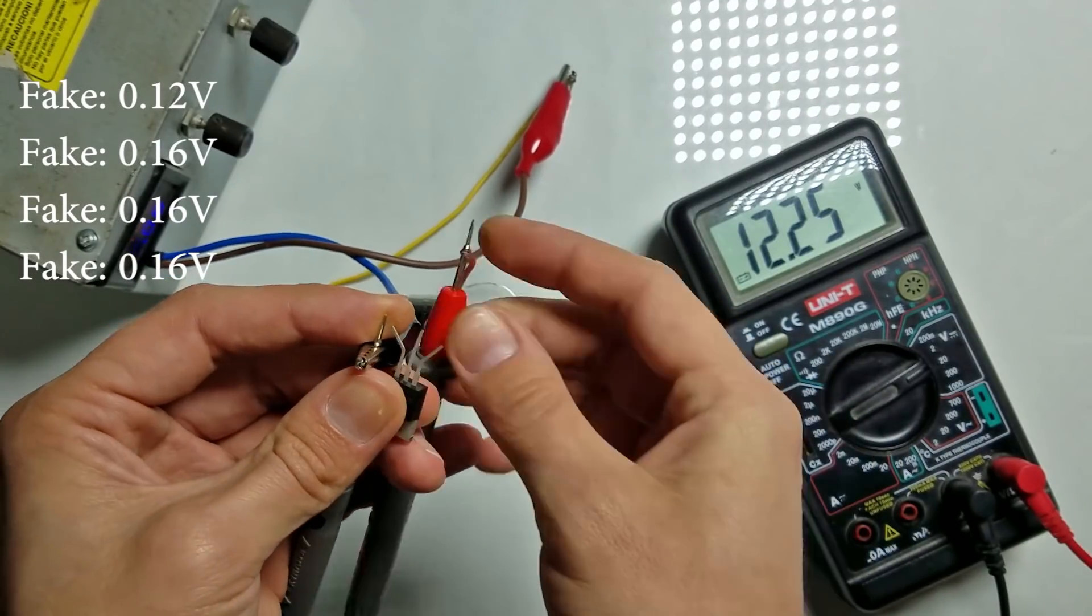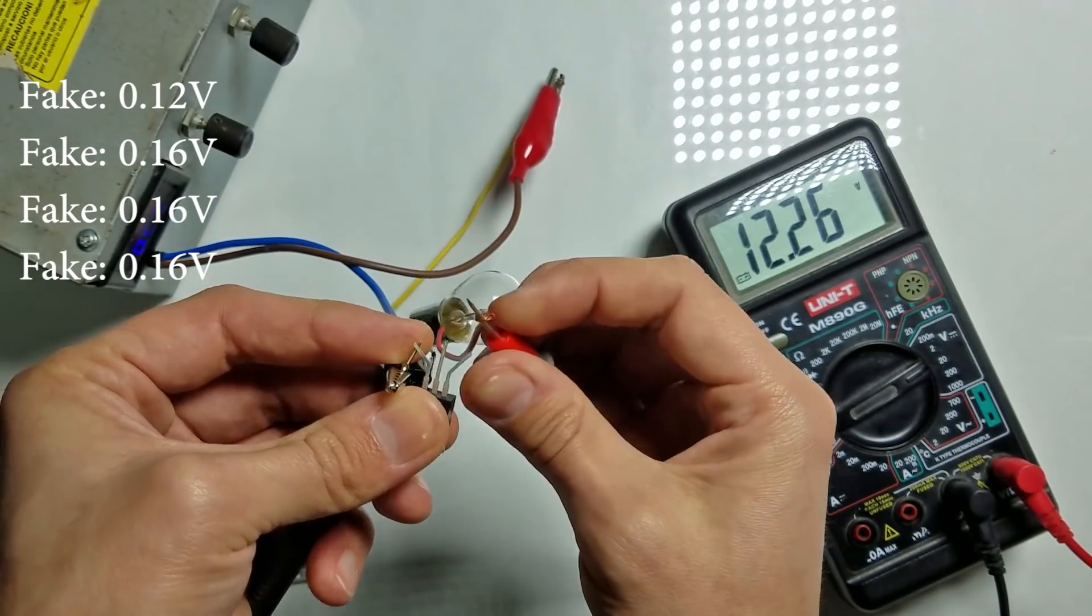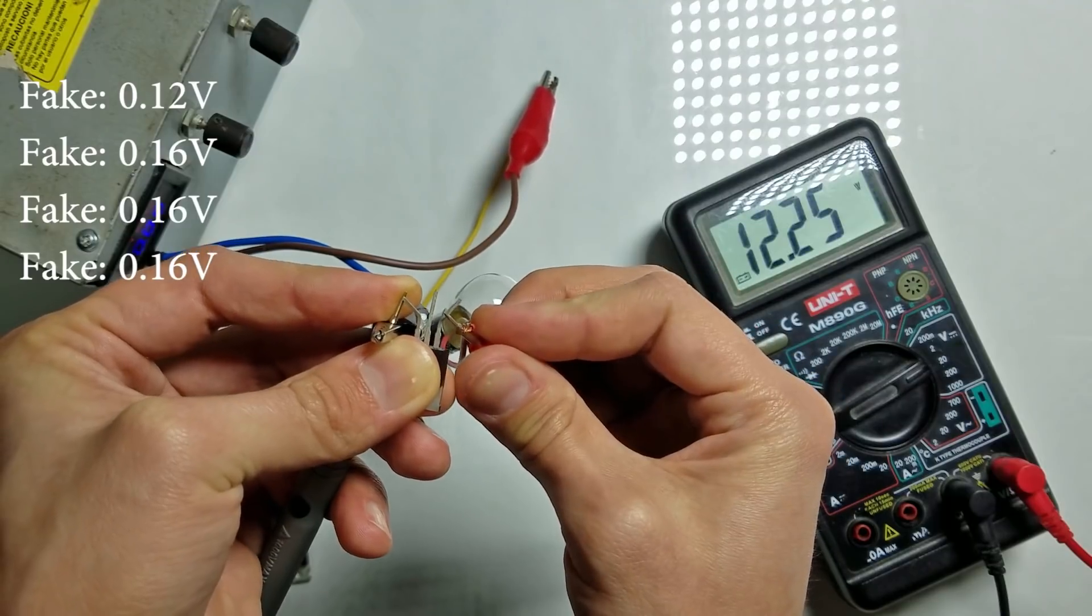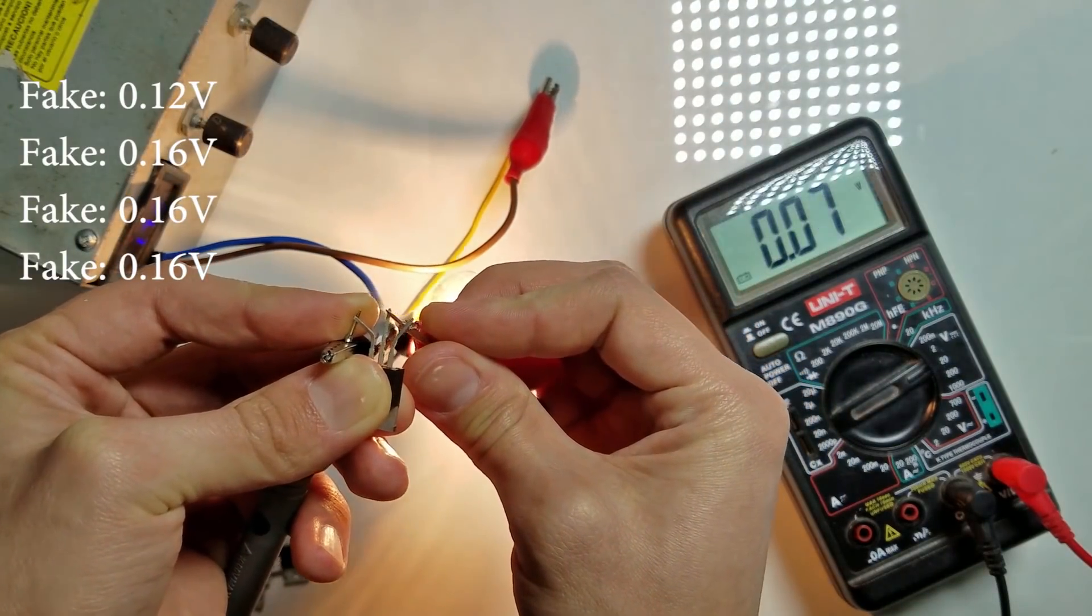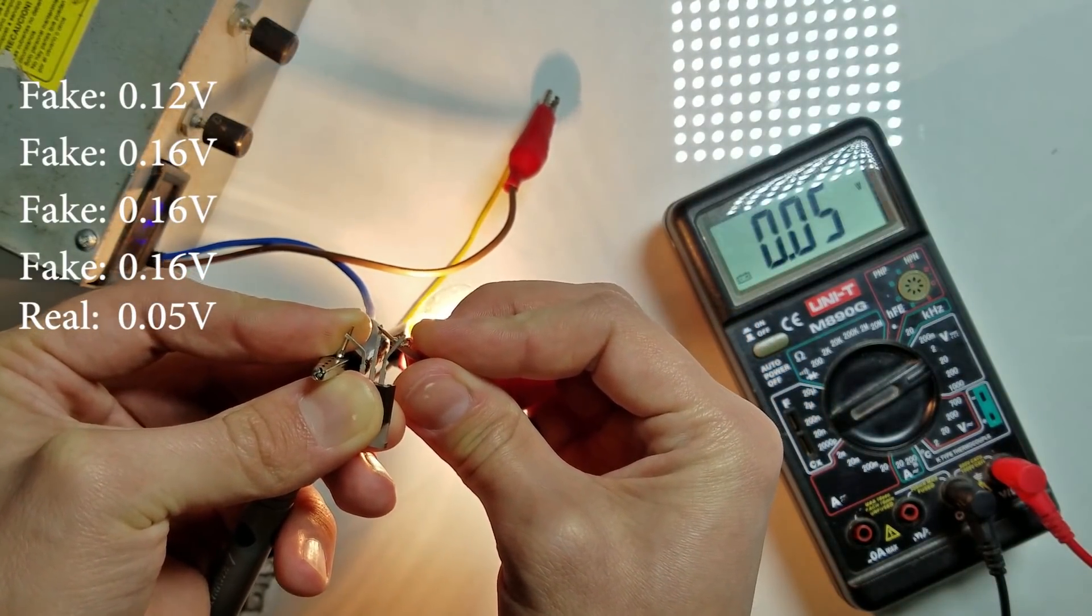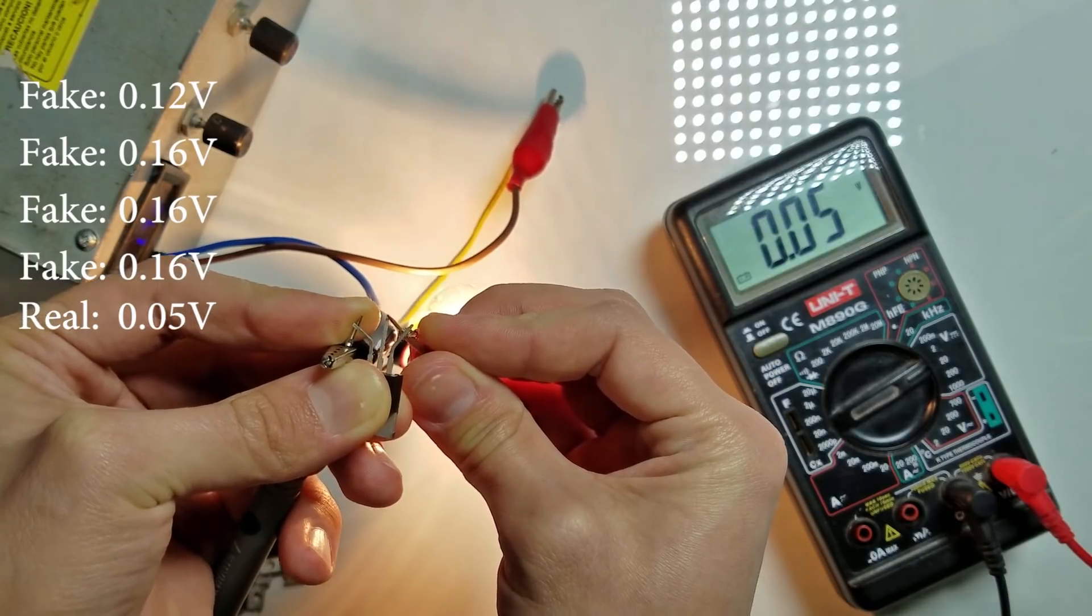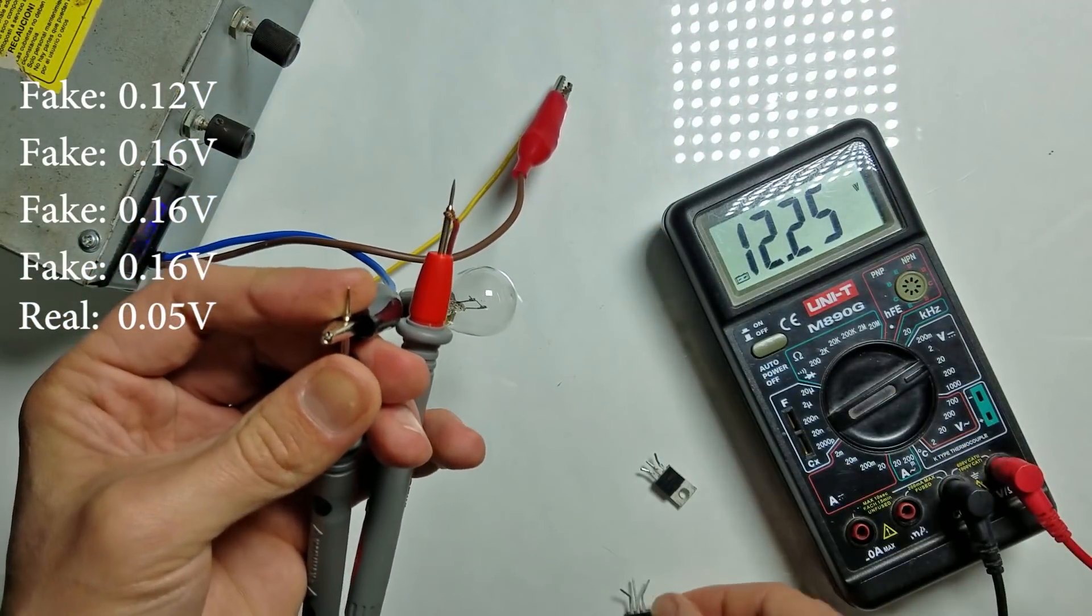Now let's compare to the real IRF540N MOSFETs. And here you can see the real difference. We have 0.05V. Good MOSFET.